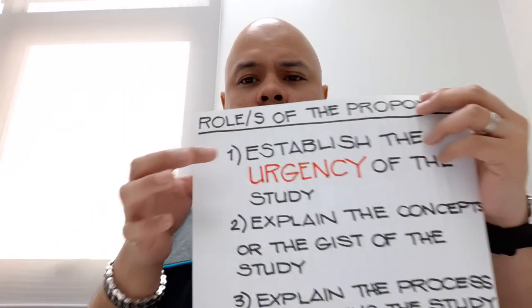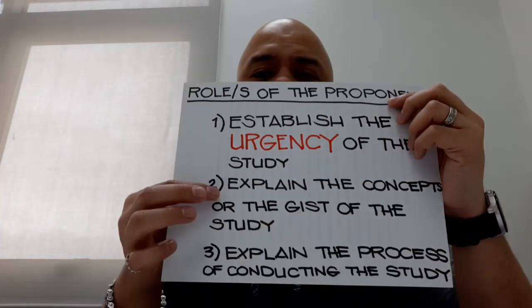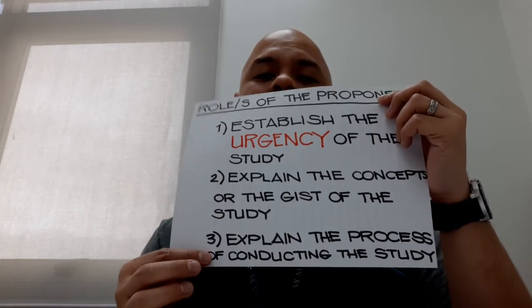That being said, the first role discusses the why, the second discusses the what, and the third discusses the how. Those are the three basic questions that you need to answer in your research proposal: why did we conduct this study, what do we know about the study, and how are we going to conduct this study?